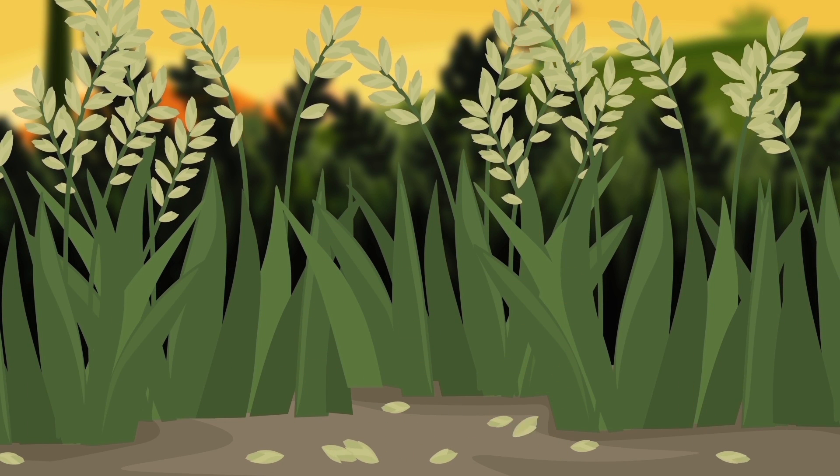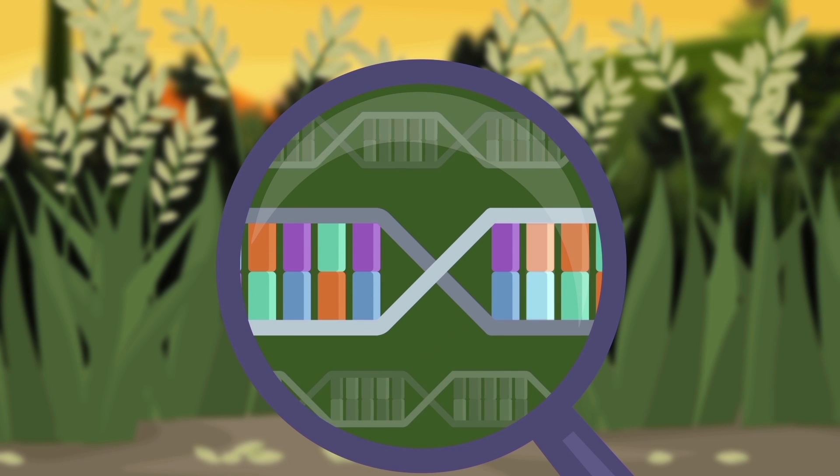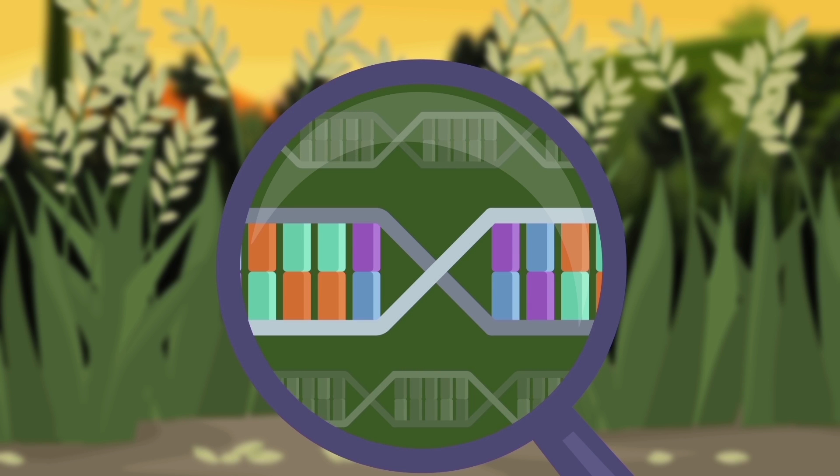But at one point, a mutation occurred in the seed-shattering gene, SH4, which was responsible for the formation of the release layer at the disconnection sites.